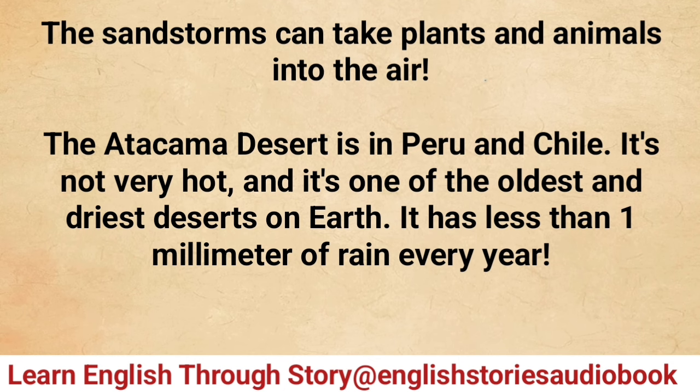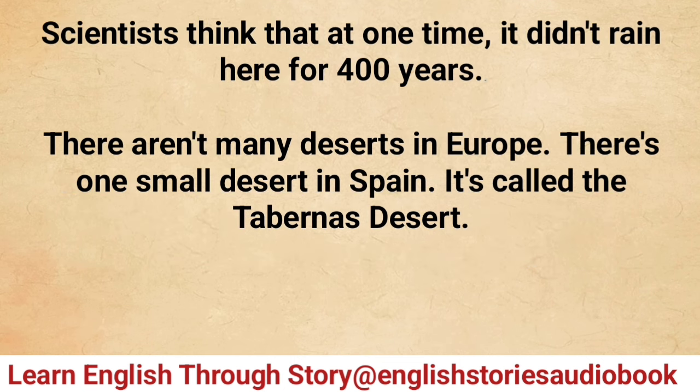The Atacama Desert is in Peru and Chile. It's not very hot and it's one of the oldest and driest deserts on Earth. It has less than one millimeter of rain every year. Scientists think that at one time it didn't rain here for 400 years.